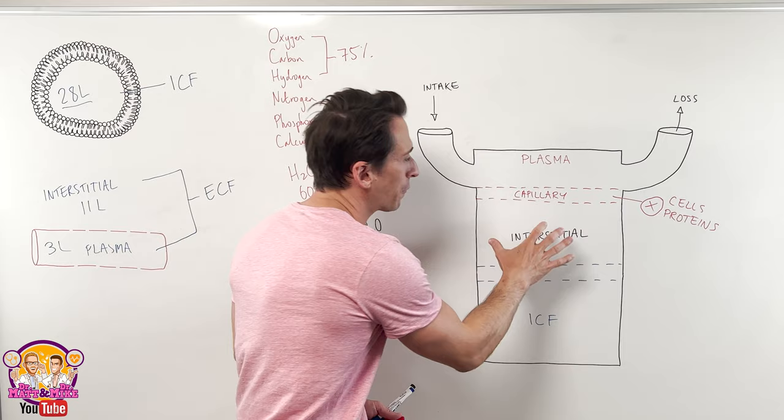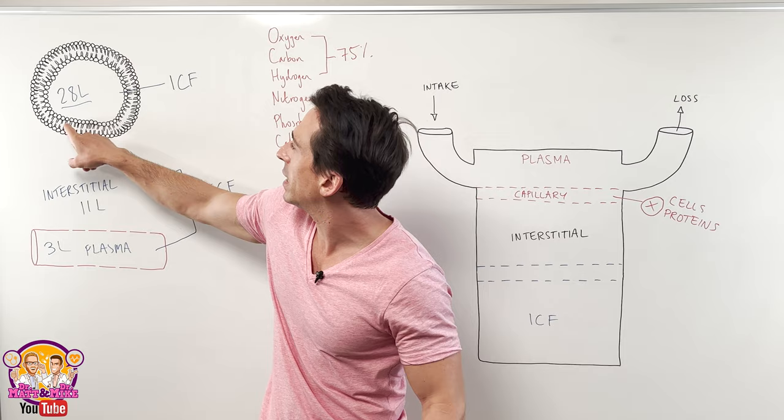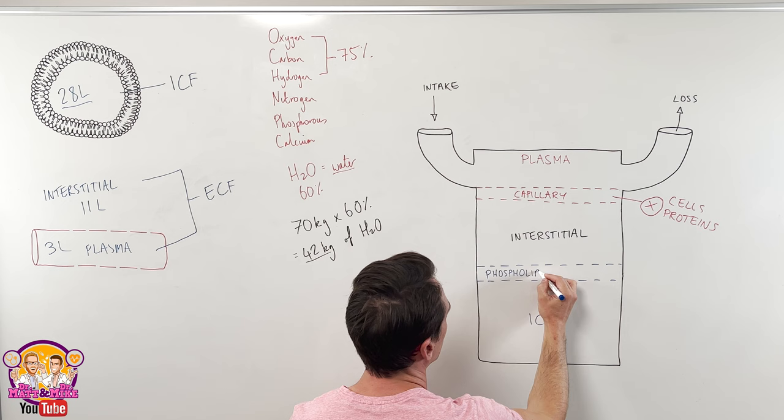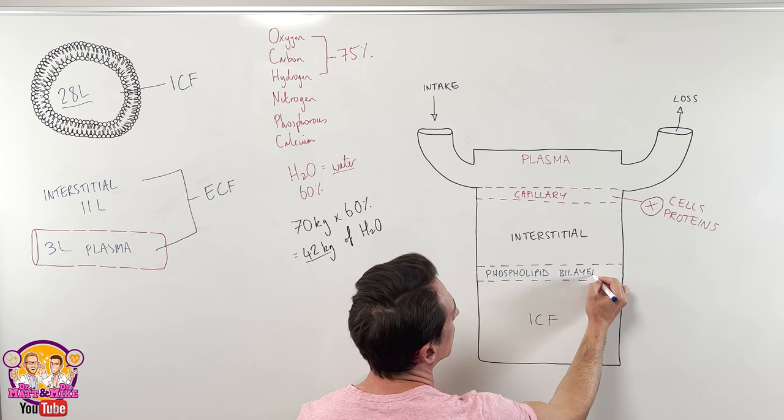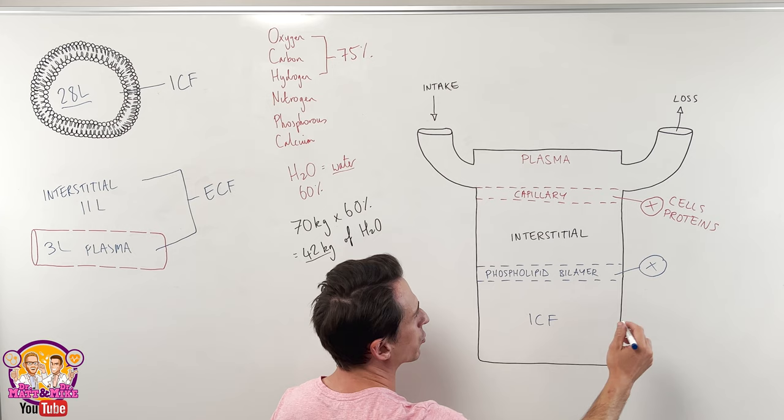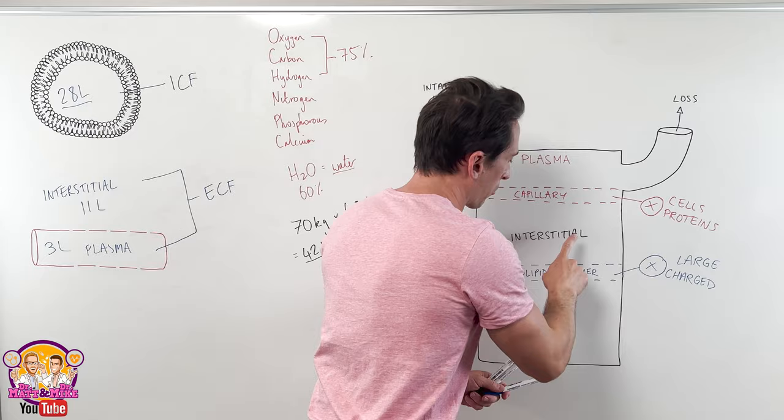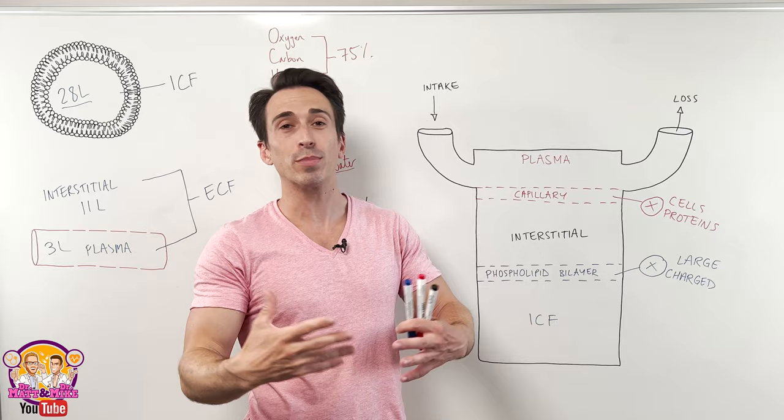But to go from the interstitial to inside the cells you need to cross another membrane which is this membrane here called the phospholipid bilayer. And the phospholipid bilayer is another semi-permeable membrane. What can't get through? I always say the mantra if it's large or charged it's not getting through. So that means proteins won't get through. That means ions won't get through. Charged atoms or elements like sodium, potassium, magnesium for example. They won't freely pass through. So that's another important point.